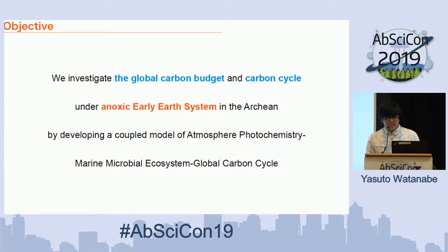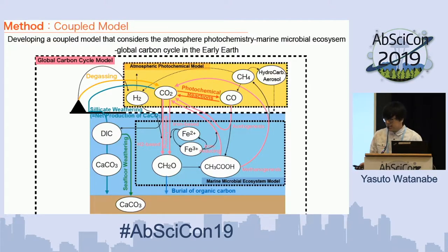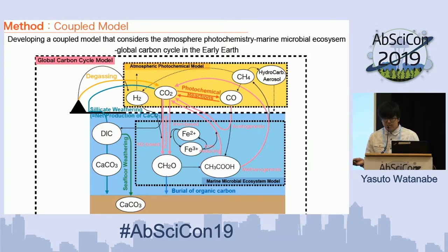To consider climate stability in the Archean, we need to consider not only the CO2 cycle but also the methane cycle and warming by methane. We investigate the global carbon budget and carbon cycle under the anoxic early Earth system by developing a coupled model of atmosphere photochemistry and marine microbial ecosystem and global carbon cycle. This is a schematic of the model we developed, and as you can see, we calculate the photochemical processes and marine microbial reactions in the context of the global carbon cycle.